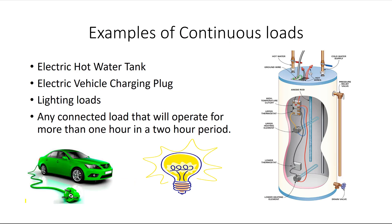Now let's look at some examples of continuous loads. An electric hot water tank can easily operate for more than one hour in a two-hour period. If there is a constant demand for hot water within a building, the electric hot water tank will continually be heating the water. Lighting loads within a house — we have all left the lights on for more than an hour, so that qualifies them as a continuous load. Our electric vehicles and the charging receptacles used to charge them are also considered continuous loads, because the batteries may take far longer than an hour to charge, keeping that receptacle under full load.